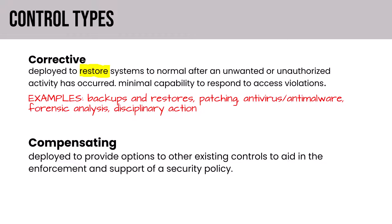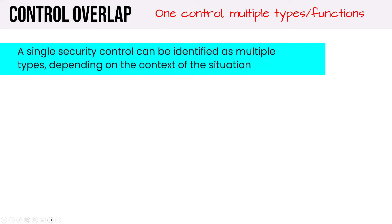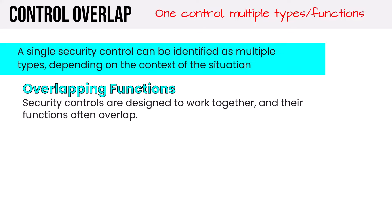Finally, compensating controls provide options to existing controls to aid in enforcement and support the security policy — they are additional backup supporting controls. These could include security policies, personnel supervision, monitoring, and work task procedures, covering things like segregation of duties, dual control, mandatory vacations, and background checks. It's time to address the overlap we see in type. A single security control can be identified as multiple types depending on the context of the situation — that is just a fact of life, and security controls are designed to work together with functions that often overlap.